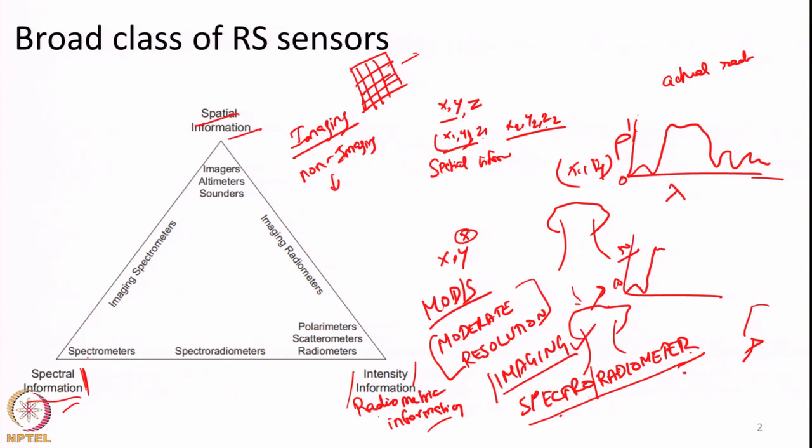Some instruments, like spectrometers we use in our hand for collecting ground data, may not collect the exact amount of energy that came in. They may collect only the relative variation of spectral reflectance — in this band it is 10%, in this band it is 20%. Such instruments are called spectrometers. Some instruments, like the handheld thermometer used during COVID where people would point it toward your eyes — the thermometer collects radiation from you and uses it to calculate your body temperature. That is essentially a pure radiometer.